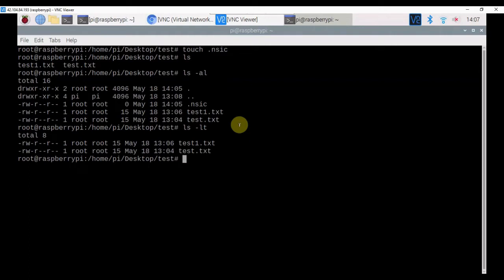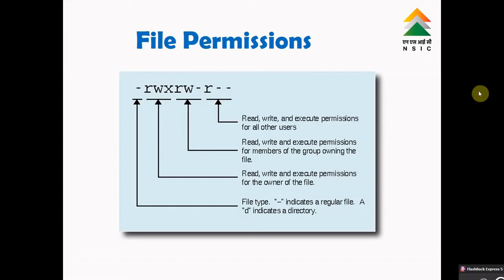So if you want to sort files based on the most recent files, then you have to issue the command as ls -lt. When you issue ls -l or ls -lt, files in the corresponding directory will be listed with the file permissions. File permissions will be with letters and characters like -rwx, -rw-, or -r-- kind of thing. Ten-digit file permissions will be there before the name of the file. The first letter denotes whether it is a regular file or a directory.